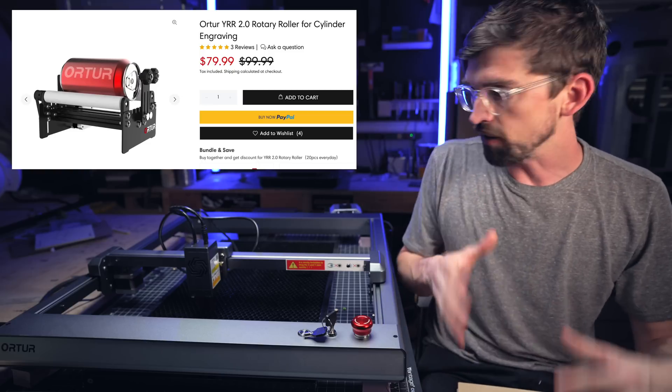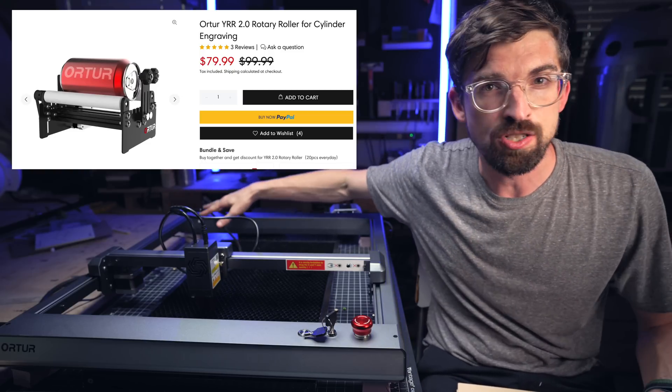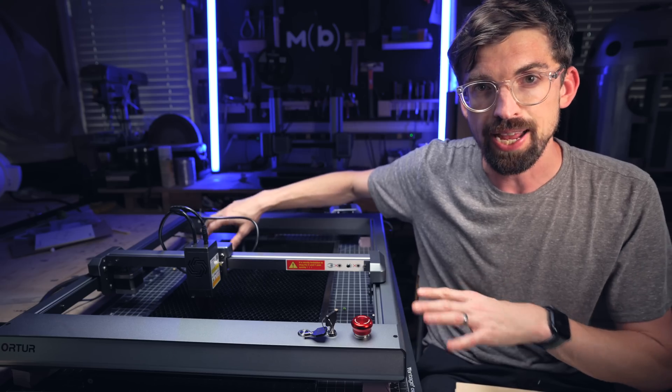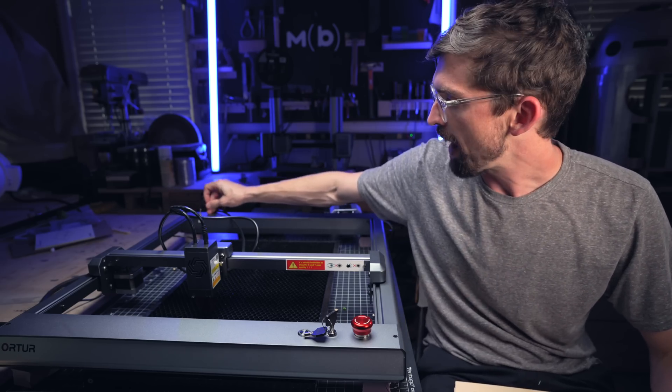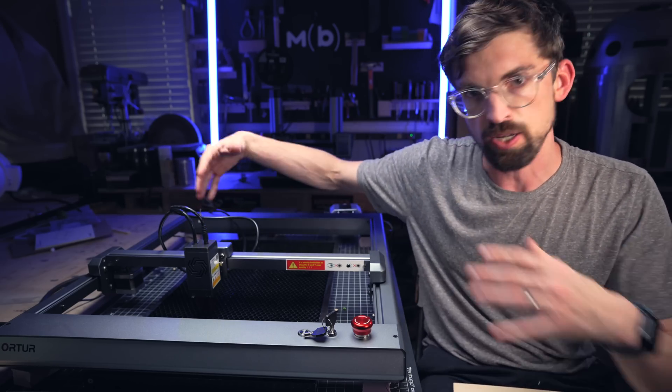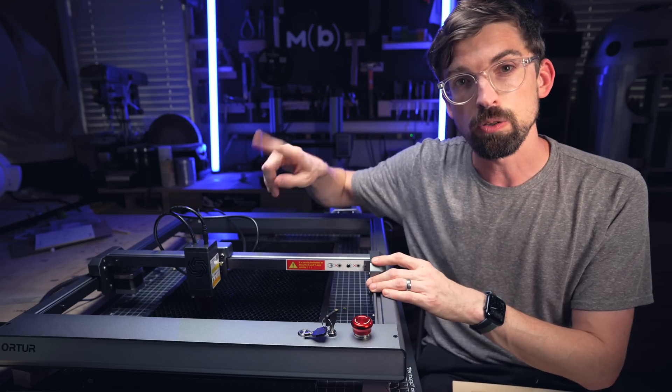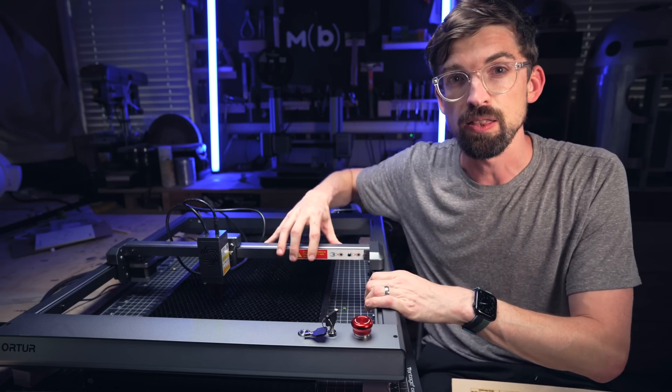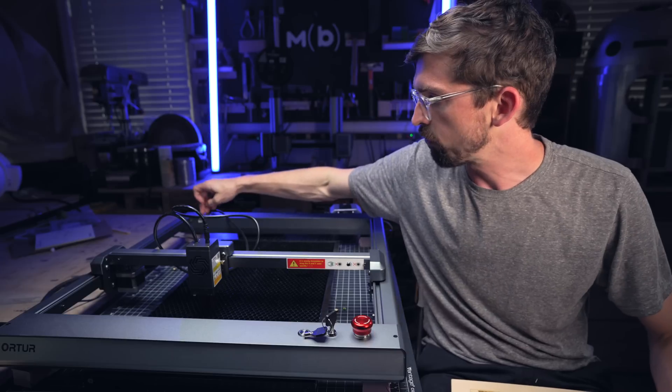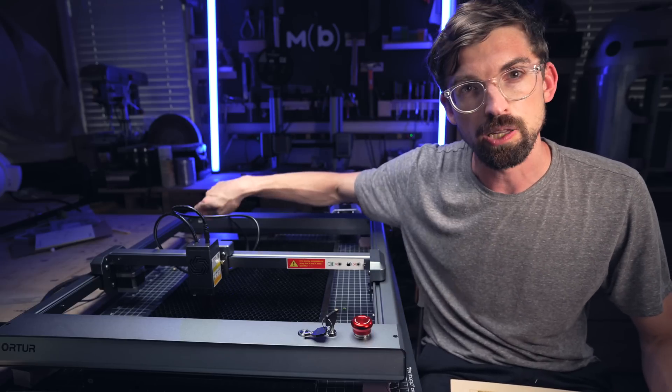They do have a rotary as an accessory and they do a really nice job of making it pretty much plug and play. I don't have the rotary here, but there is a switch on the back that changes the Y motor from just like your standard gantry setup, which is what we have right here to a rotary. So then it's going to spin the rotary versus moving this in the Y direction. And that switch in the back is super easy, plus the plug to connect it.